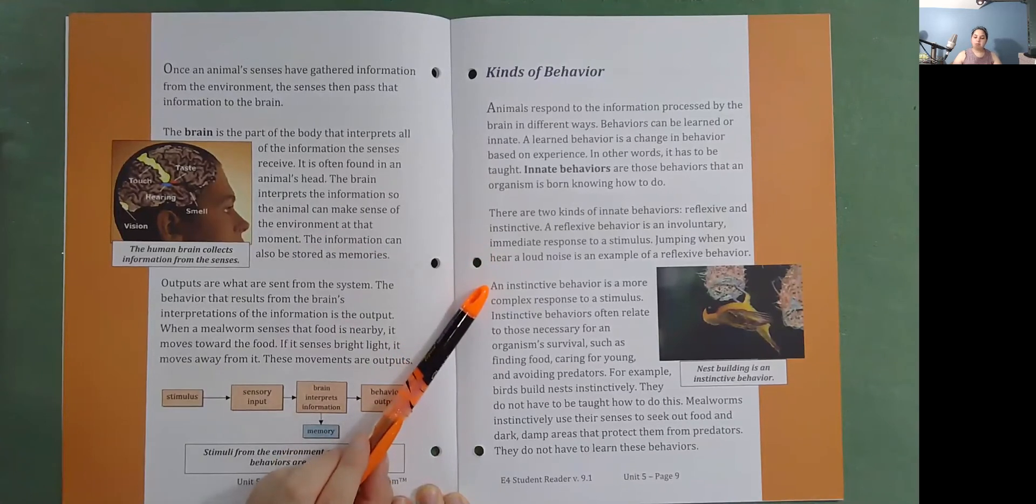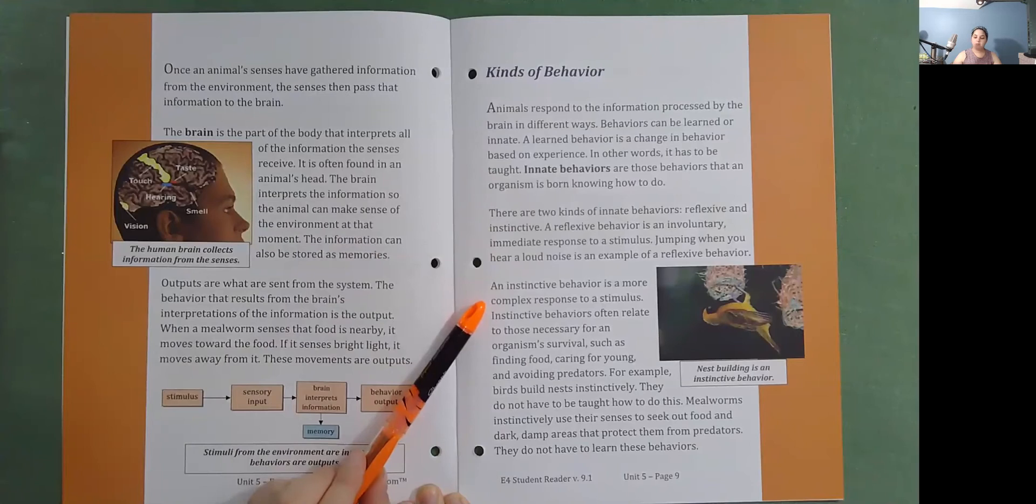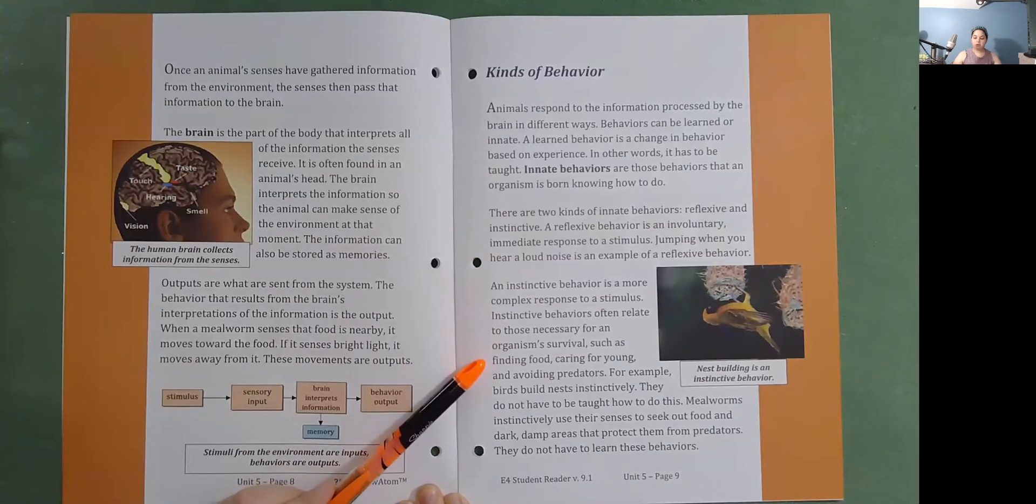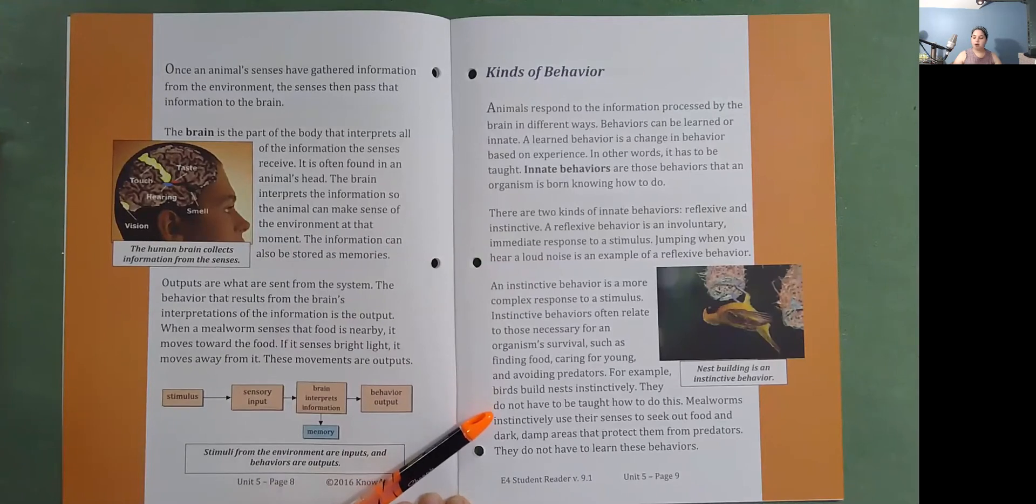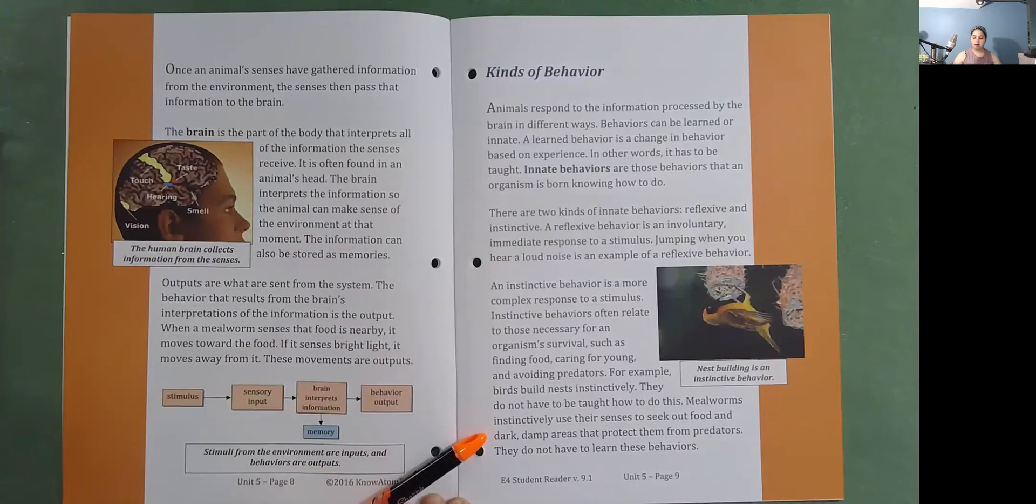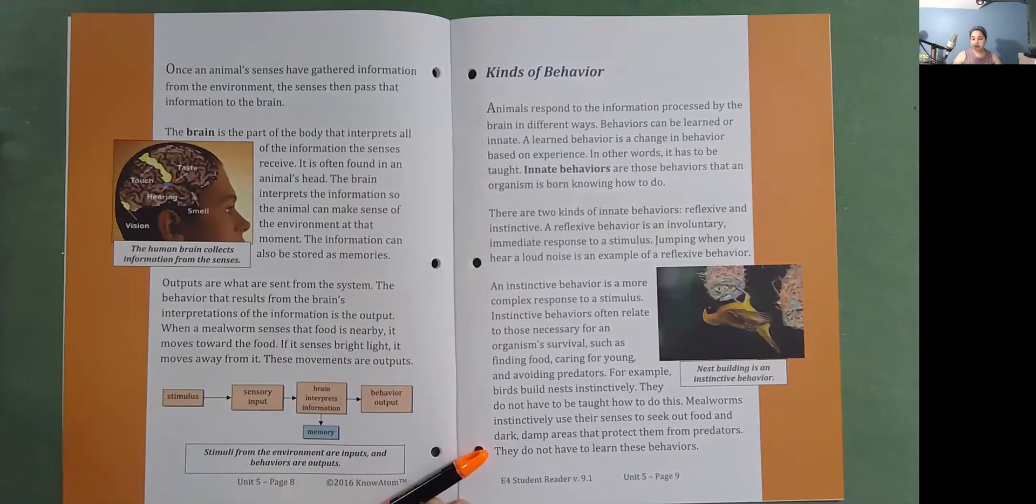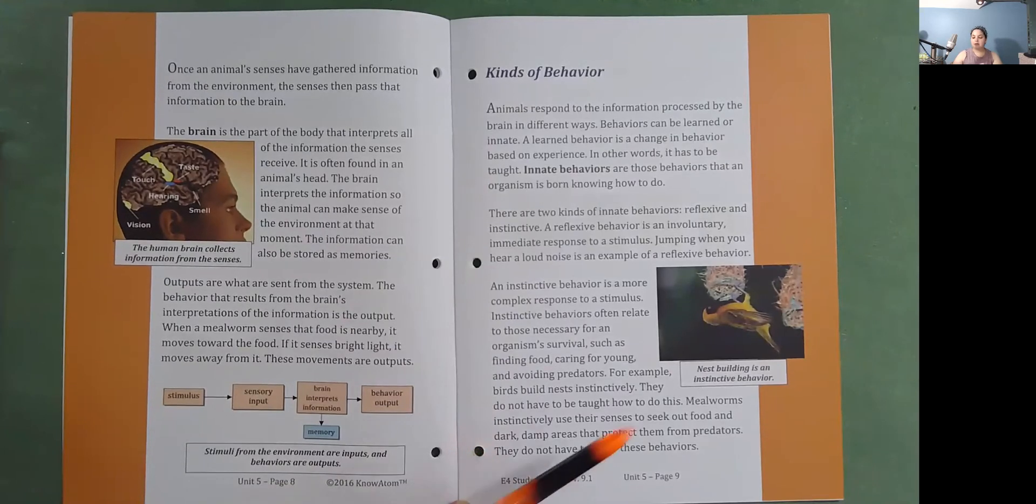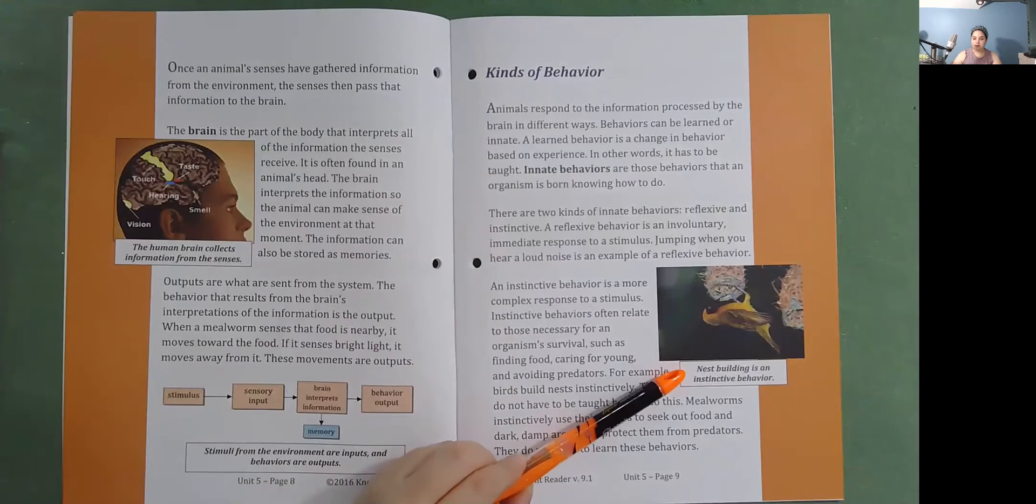Jumping when you hear a loud noise is an example of a reflexive behavior. An instinctive behavior is a more complex response to a stimulus. Instinctive behaviors often relate to those necessary for an organism's survival, such as finding food, caring for young, and avoiding predators. For example, birds build nests instinctively. They do not have to be taught how to do this. Mealworms instinctively use their senses to seek out food and dark, damp areas that protect them from predators. They do not have to learn these behaviors. Nest building is an instinctive behavior.